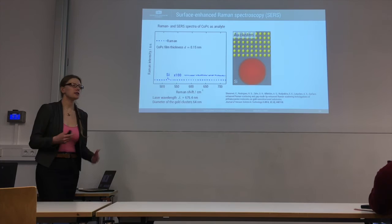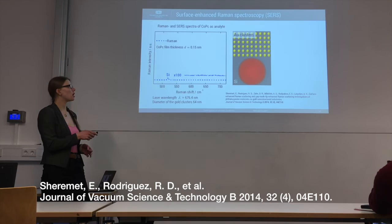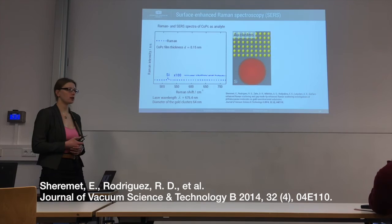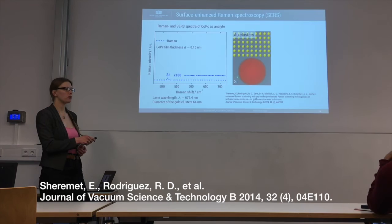Let's see how that works in practice. Here we have a silicon substrate which is partially covered with gold nanoparticles, and the whole substrate is covered with a cobalt phthalocyanine film of thickness 0.15 nanometers, or half a monolayer. When we illuminate the silicon substrate with laser light, we see the silicon signal but we see no signal from the cobalt phthalocyanine — even if we multiply the signal by 100 times, there is simply nothing to be seen.